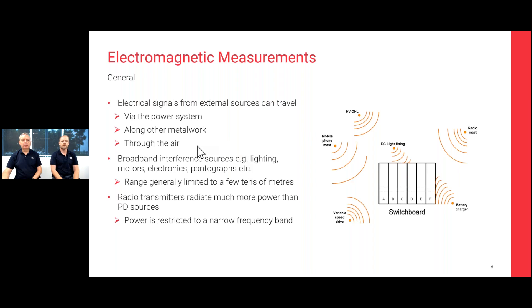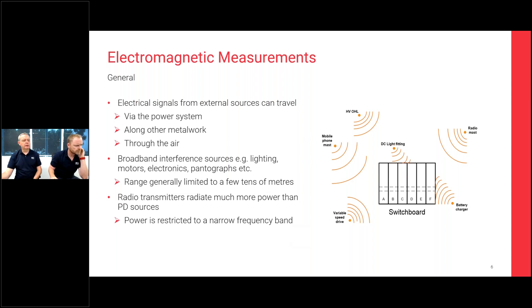When it comes to electromagnetic techniques, different sources can impinge on the measurements. Electrical interference signals can come in via the power network or earthing system, from genuine discharge sources on associated plant, along metalwork, or through the air. Broadband interference sources — from poor light fittings, motors, electronics, VSDs, or pantographs near a railway — are generally limited to just a few tens of meters.